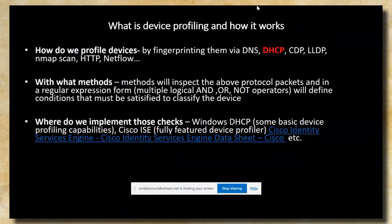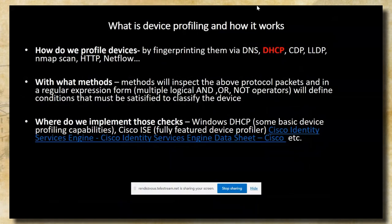What is device profiling and how does it work? Think of device profiling as fingerprinting the device. We do that by inspecting the traffic of various protocols that the device may use — that can be DNS, DHCP, layer two protocols such as Cisco Discovery Protocol, HTTP, and so on. Also, the device profiler can choose to use an NMAP scan, which will actually try to determine the services that your device is exposing.